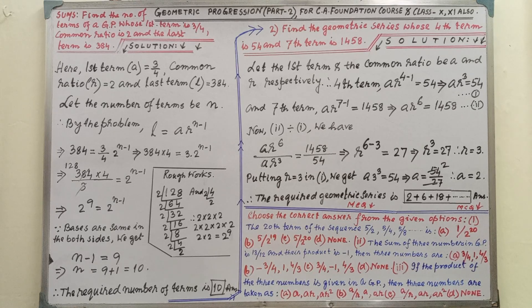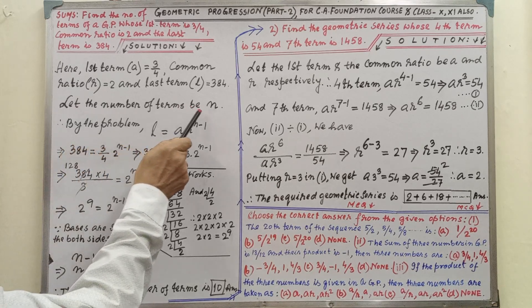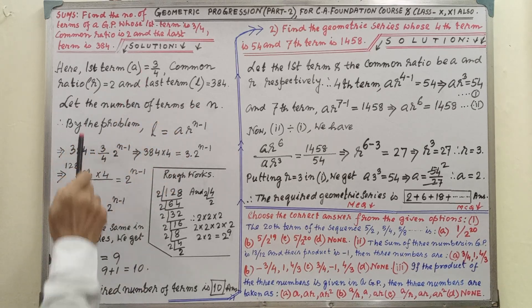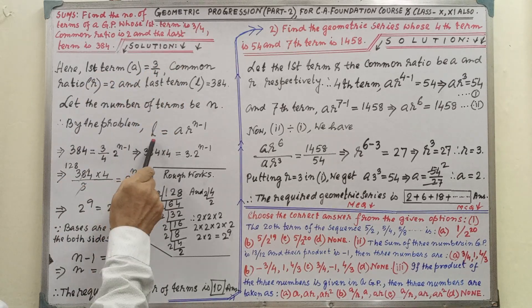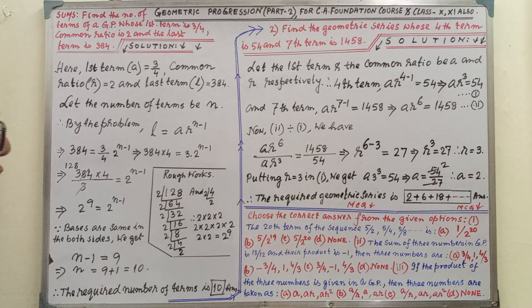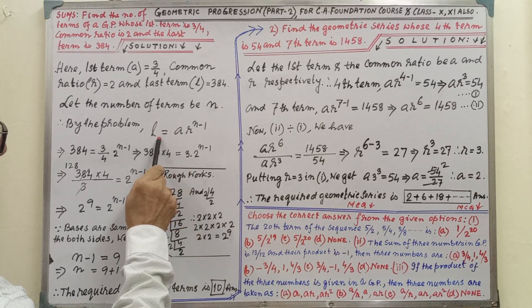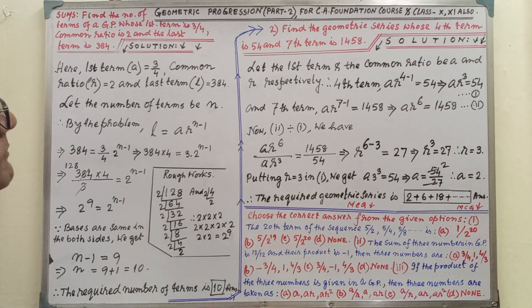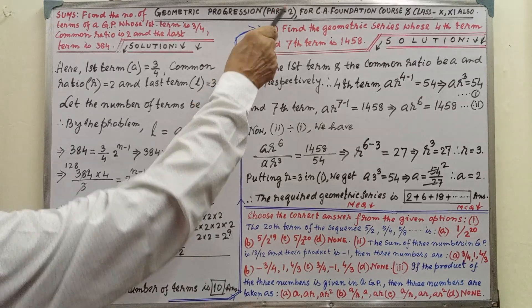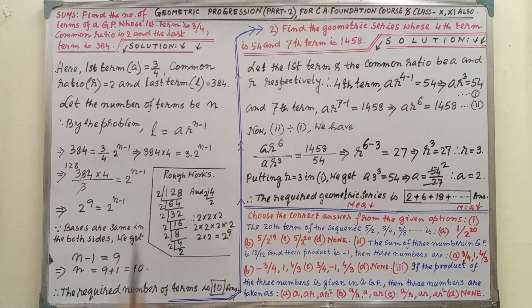We have to find the number of terms. Let the number of terms be N. Then by the problem, last term is given as 384, so L = A·R^(N-1). This is the formula we are getting from video 1, part 1 video. You will get this formula there.